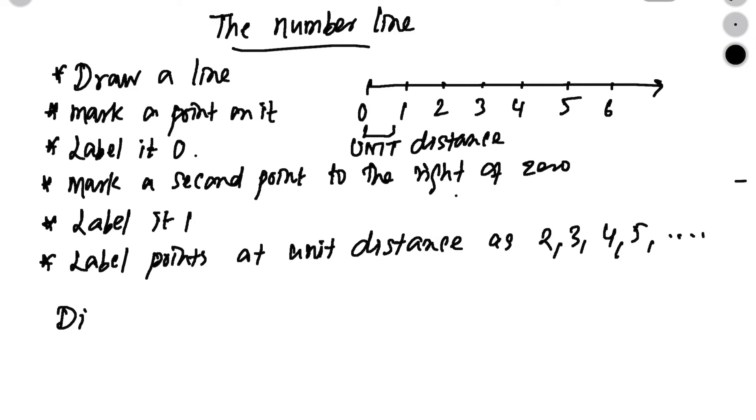So here, the distance between 2 and 4 will be from 2 to 3, that is 1 unit and from 3 to 4, that is another 1 unit, totally 2 units. So, we say the distance between 2 and 4 as 2 units.